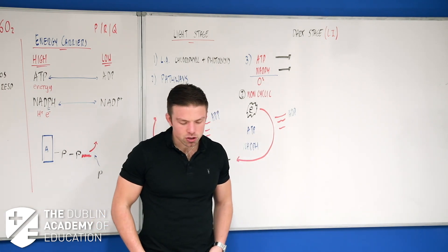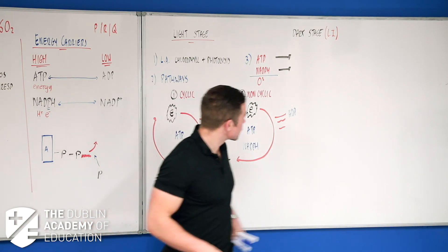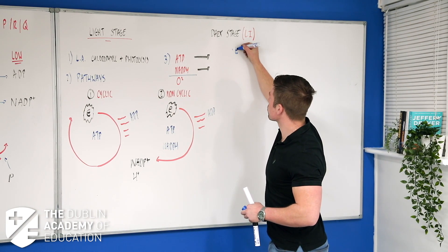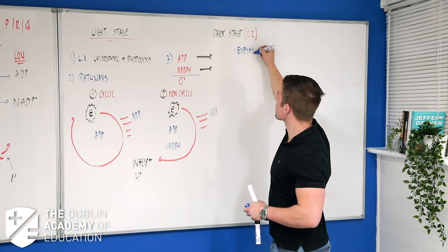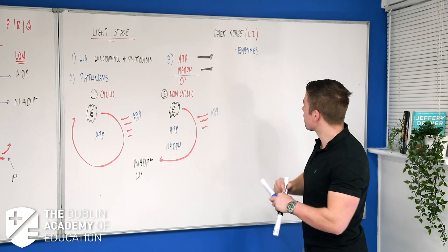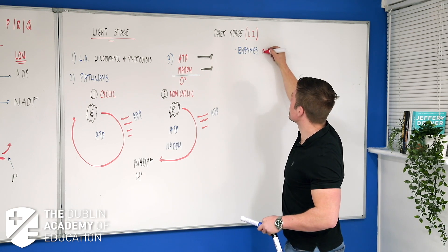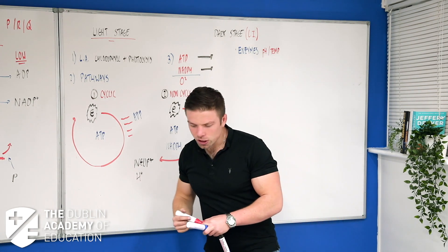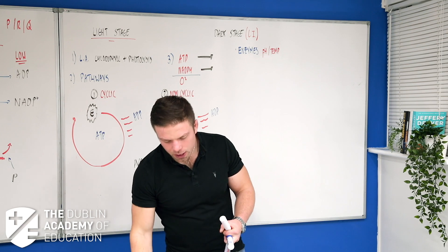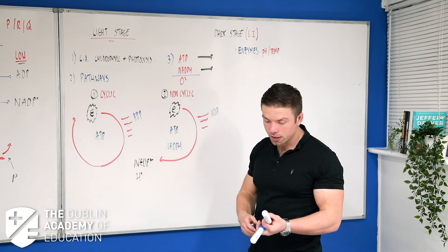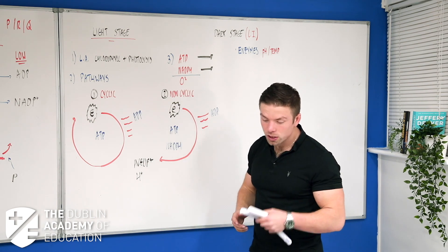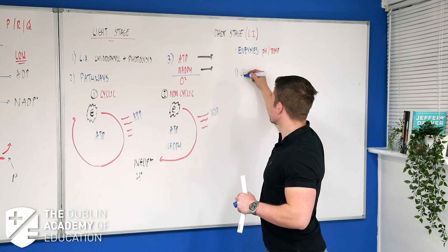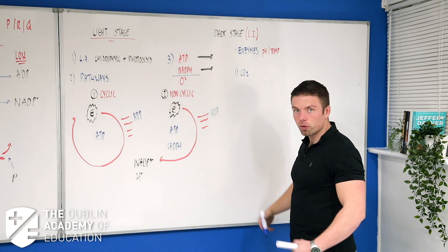For the dark stage — page 77 — there's not a lot we need to know. First, the dark stage is controlled by enzymes, and enzymes are controlled by pH and temperature — write that in your notes. There are four steps; the first two are the most important. Step one: CO₂ diffuses into the stroma — or simply, CO₂ is absorbed.